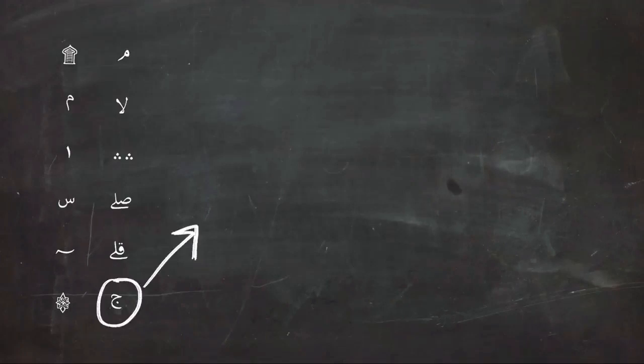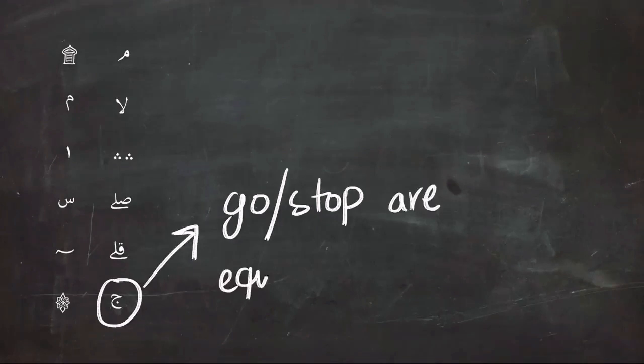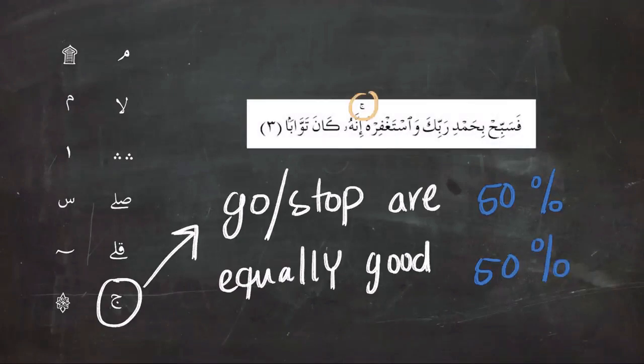So it is better to stop at the sign. Next is the sign of jim, and jim gives you 50-50 percentage of going or stop, or you could just keep reading and it would be equally good.